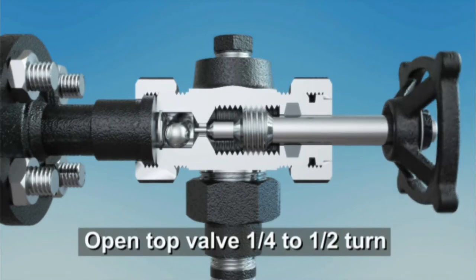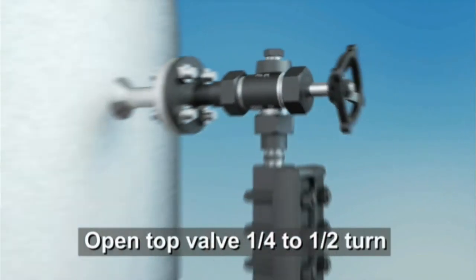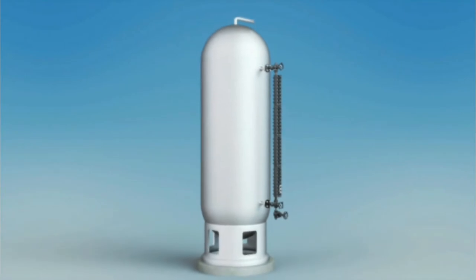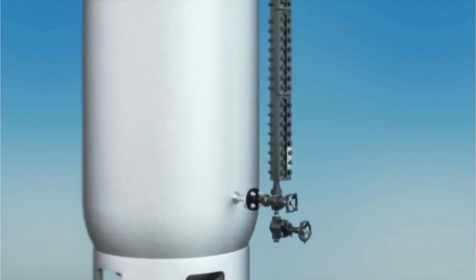The first step is to open the top valve one-quarter to one-half turn. It's always best practice when commissioning any Jorgenson level product to open the top valve first.